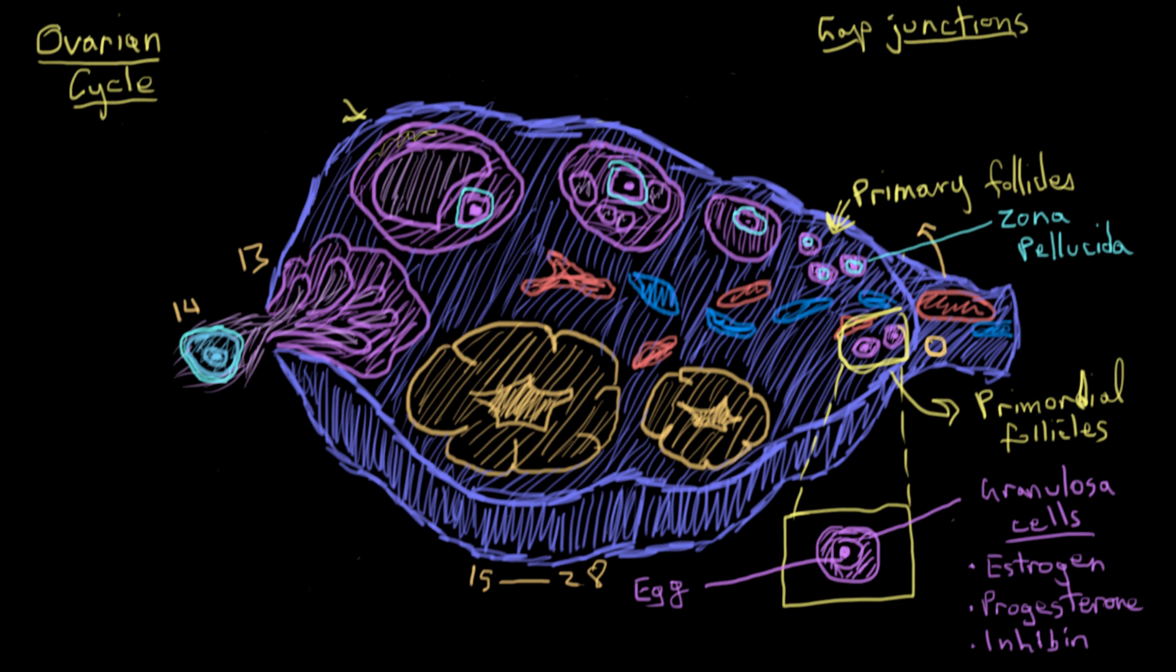that keep those primary oocytes stuck at that meiosis I stage. Because you remember, at this point, all of these primary oocytes are stuck in meiotic arrest. They're not dividing and reducing their chromosome copy number.